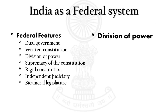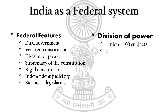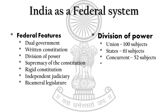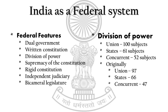At present, there are 100 subjects in the Union List, 61 subjects in the State List, and 52 subjects in the Concurrent List. Originally, during the time of formation, the Union List contained 97 subjects, the State List contained 66 subjects, and the Concurrent List contained 47 subjects.